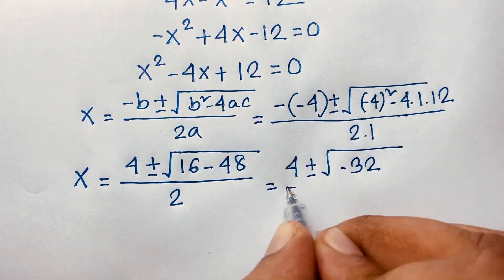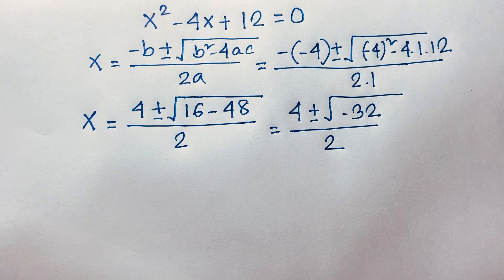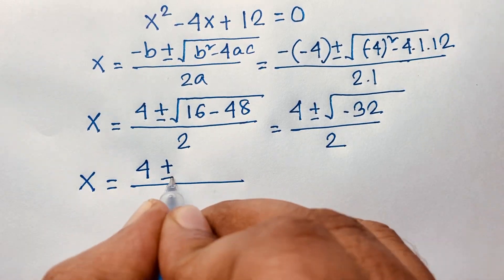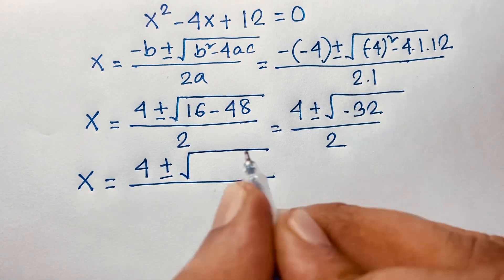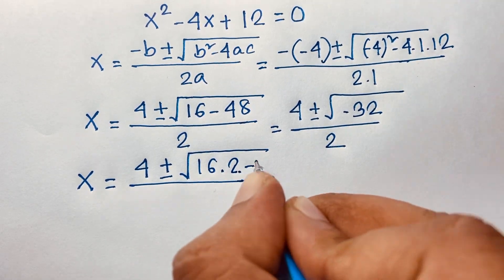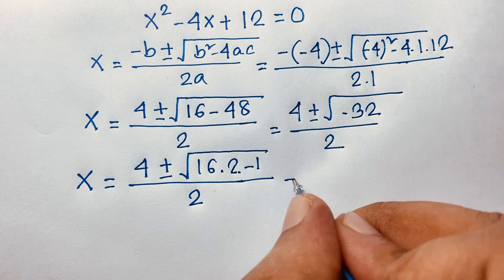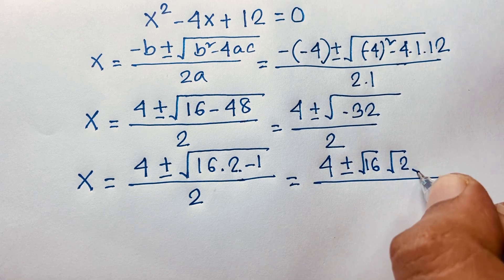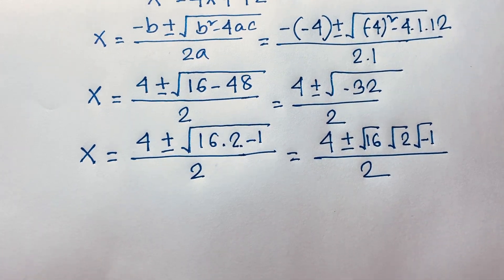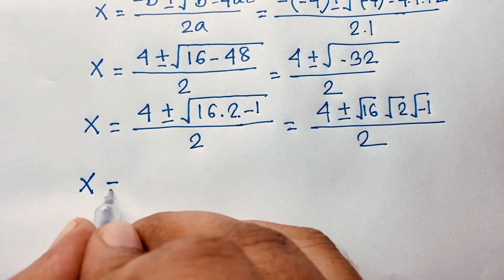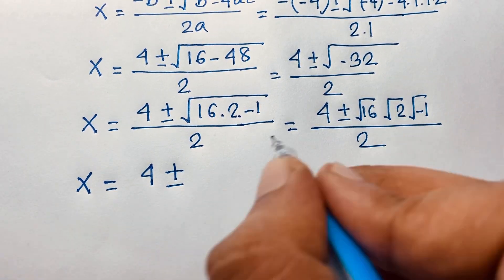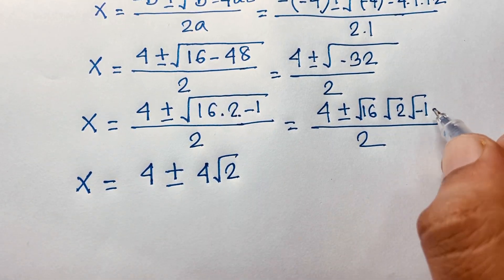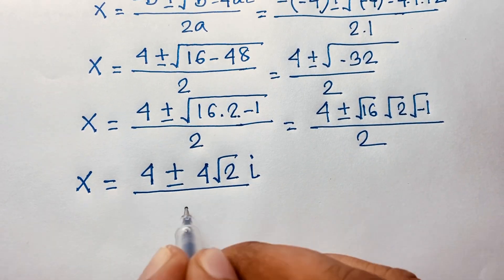We simplify the square root of negative 32: it equals square root of 16 times 2 times negative 1, which is 4 times square root 2 times square root of negative 1. Since square root of negative 1 equals i, we get 4√2·i over 2.